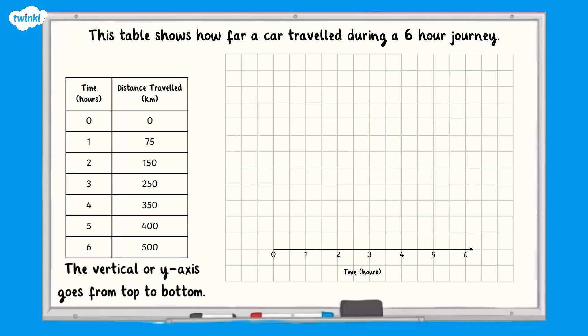Remember, this is the line that goes from the top to bottom at the side of the graph. This axis represents the distance the car travelled. We will need to start at 0 and go up to 500.